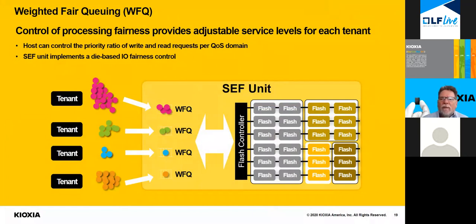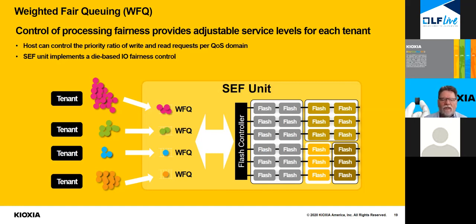Another key feature of software-enabled flash is the advanced queuing and scheduling features. Scheduling and queuing controls how die time is spent — how much time for read, write, and copy operations, as well as the prioritization of multiple workloads. In a multi-tenant environment, there may be business reasons to enforce fairness or give certain tenants priority, and these needs may change over time. The host can prioritize and manage die time through the software-enabled flash API, and the device enforces scheduling policy.